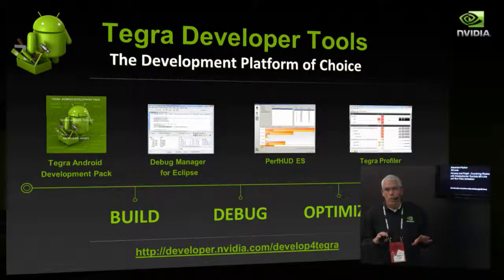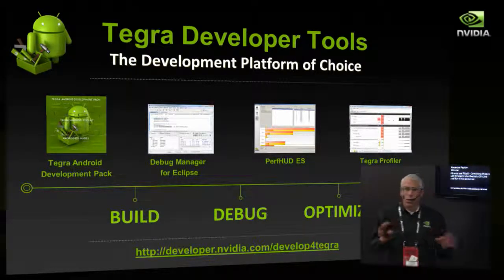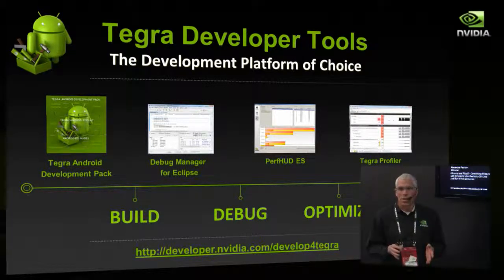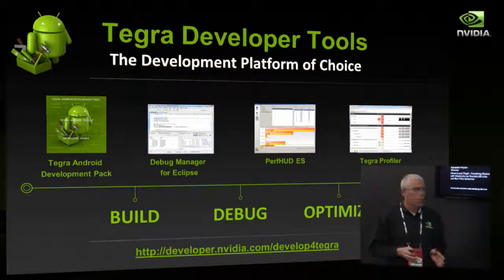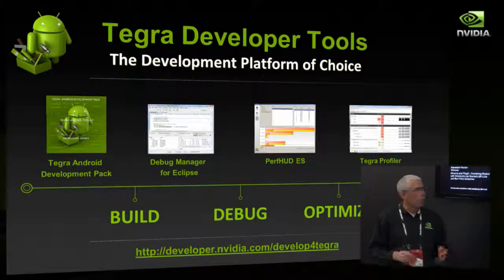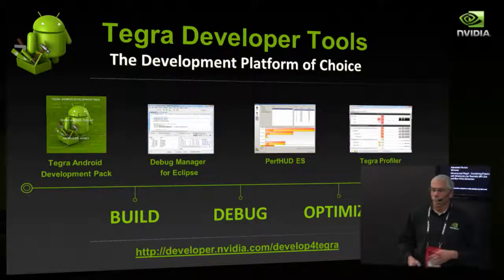What we're really trying to do at NVIDIA with our mobile tools for Tegra is provide a whole ecosystem for game developers. This is end-to-end — from setting up your development environment, to building your applications, to debugging in whatever platform you see fit, to graphics profiling and debugging, and then finally CPU profiling with our Tegra Profiler.